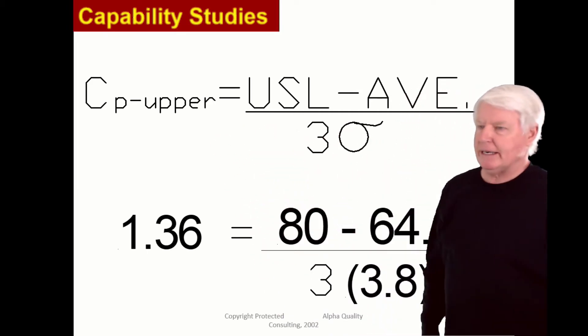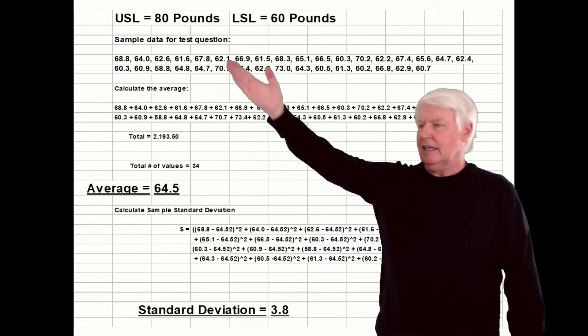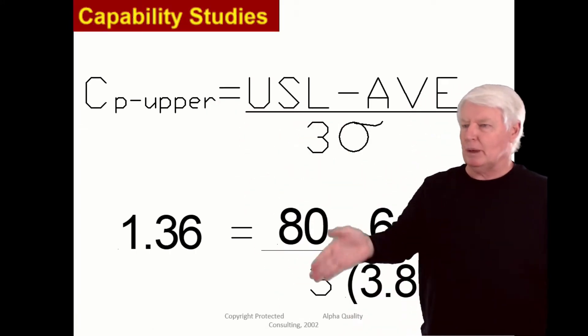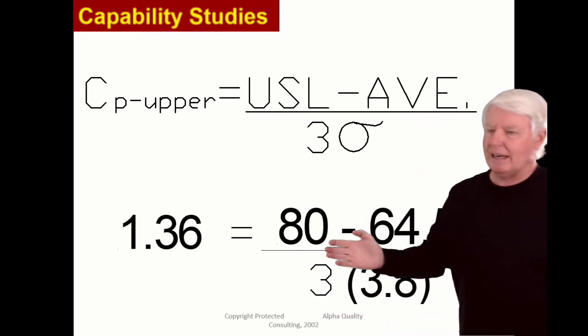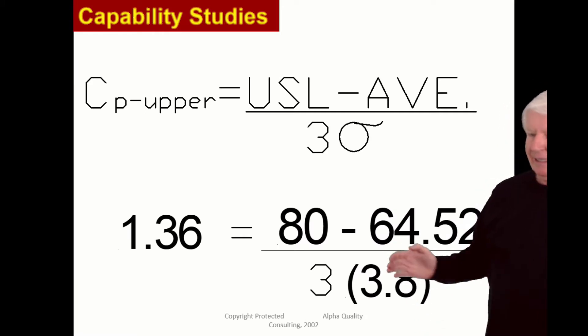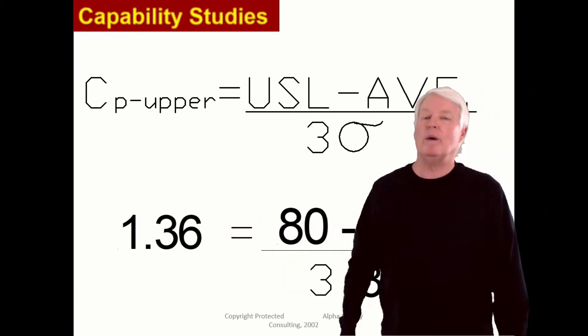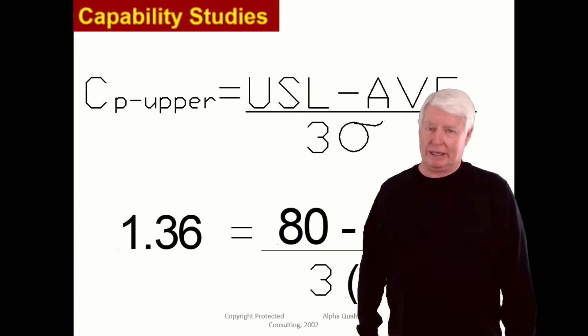Here's the formula for CP upper: upper spec limit minus average divided by three sigma. There's my upper spec limit, so I'll plug that in there. My average was 64.52, and my sigma value was 3.8. Now you just number crunch that, and it gives you 1.36. So CP upper, in this case, is 1.36.